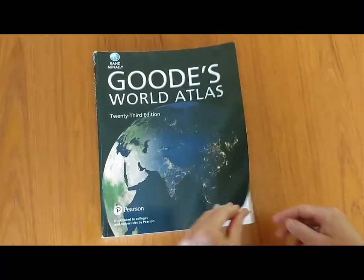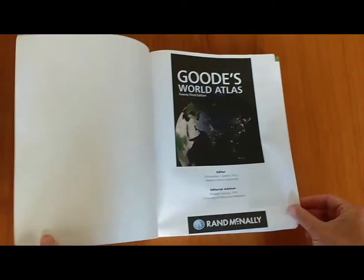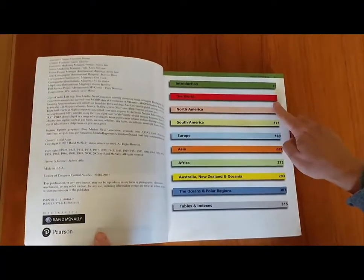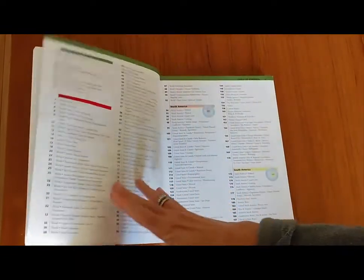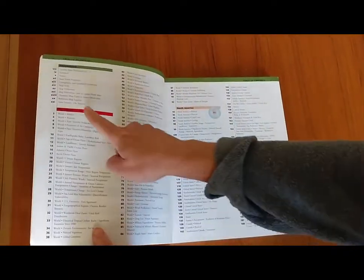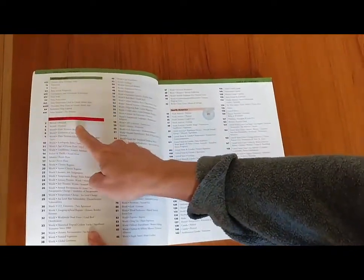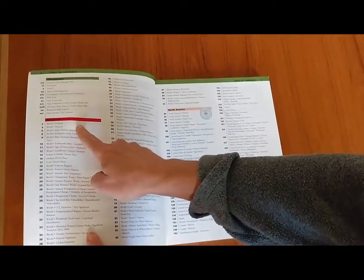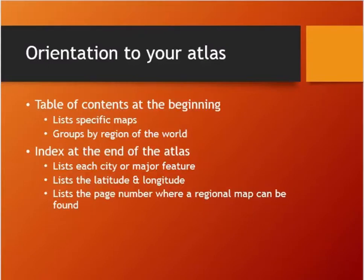First let's get oriented to your atlas. The table of contents is at the very beginning of your atlas — it lists the maps by theme and region. The index is in the back of your atlas. It lists specific places and tells you the latitude and longitude of those places as well as the page number where you can find the map of that location.